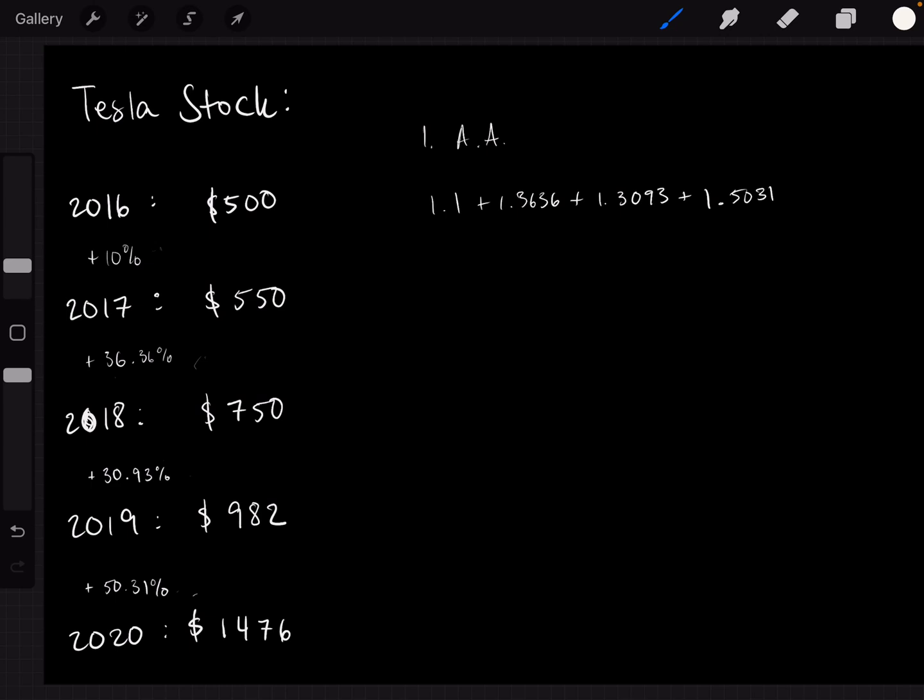And now there are 1, 2, 3, 4 terms. So you divide this number by 4. That's how you calculate the arithmetic average, right? So when you actually type that into a calculator, the number that you get is 1.319 or a growth rate, average growth rate of 31.9% per year.